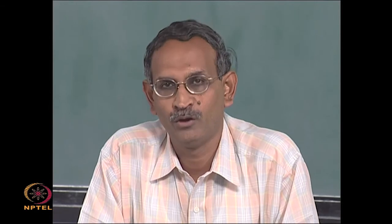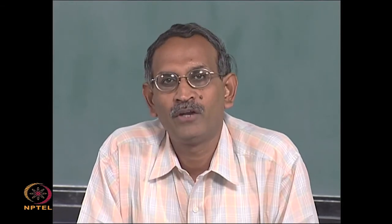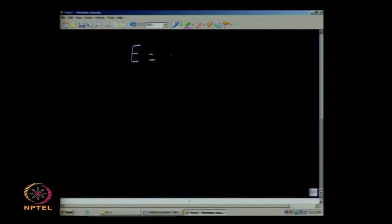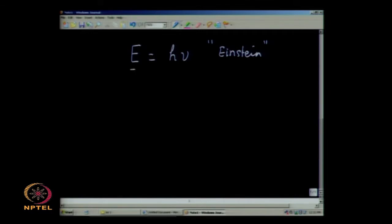The name photon was not given by Einstein; he called them wave packets. The name photon was given to Einstein's packets later by a chemist Gilbert Newton Lewis. What is important is that radiation consists of photons, and the energy of the photon is given by the Einstein law — a proposition that Einstein made in 1905 for the photoelectric effect — that the energy of the photon is proportional to the frequency of radiation, and the proportionality constant is Planck's constant.